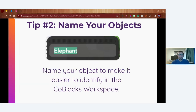Tip number two is to always rename your objects when you bring them in. Objects dragged in from CoSpaces have a default name, but if you have multiple elephants in your scene, for example, you want to name them appropriately. The better the name of your object, the easier it is to identify when you're programming that object in CoBlocks — names like 'elephant A,' 'baby elephant,' or 'elephant one' depending on your plan.